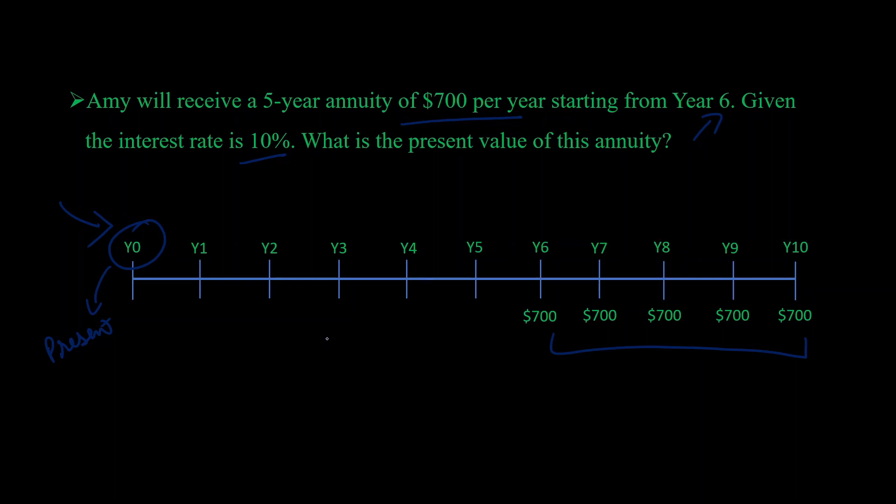The problem is a two-step process. First, we calculate the present value of this annuity using the formula discussed in our annuity video. But that formula will only give us the value of this annuity in year 5. Why year 5 and not year 6? I'll discuss it when we do the math.